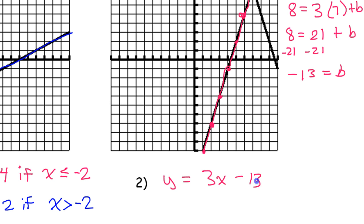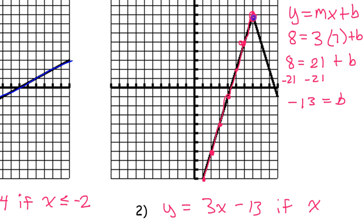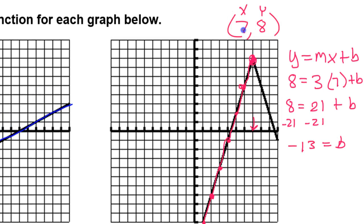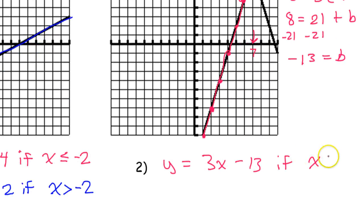Now we need the condition. When is it the first branch? Looking at the vertex — the x value is 7. So that's the number we're dealing with. This first branch is to the left of 7, so we say x is less than or equal to 7.